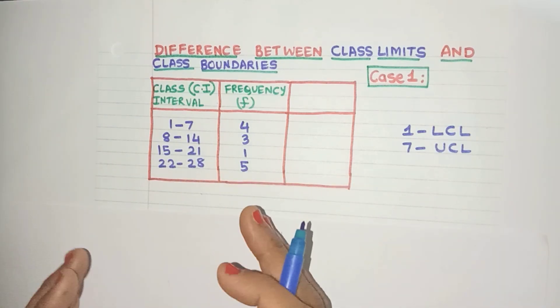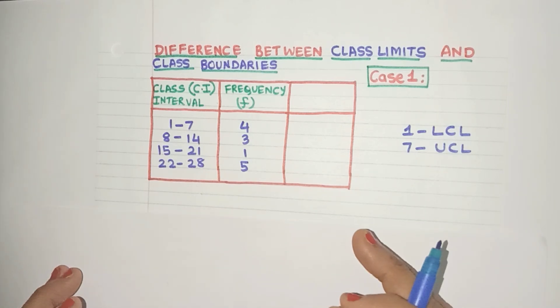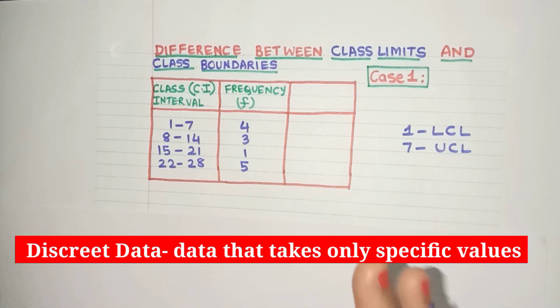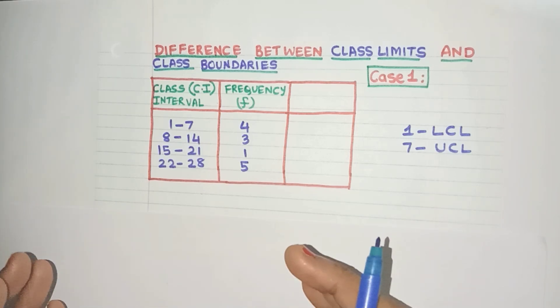Now friends, these type of class intervals are very useful to depict discrete data. Now what are discrete data? Well any data that takes only specific values are discrete data. For example, say the marks of students or number of vehicles in a family, these values are only particular values.